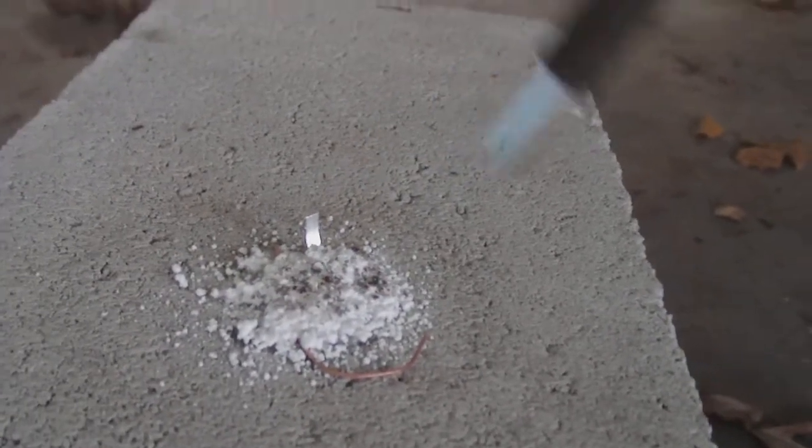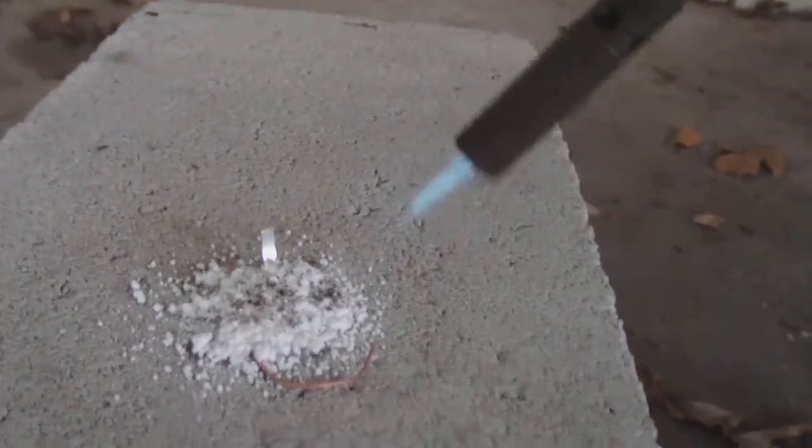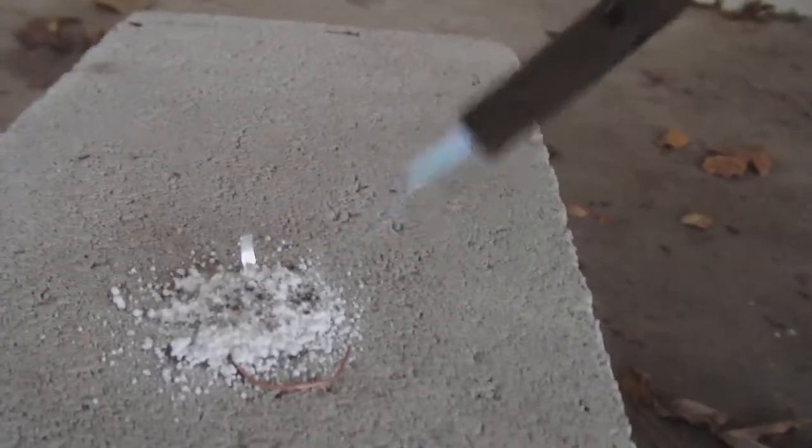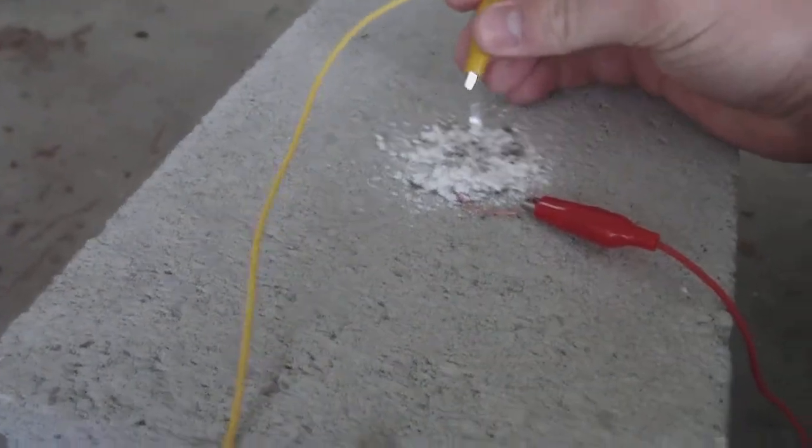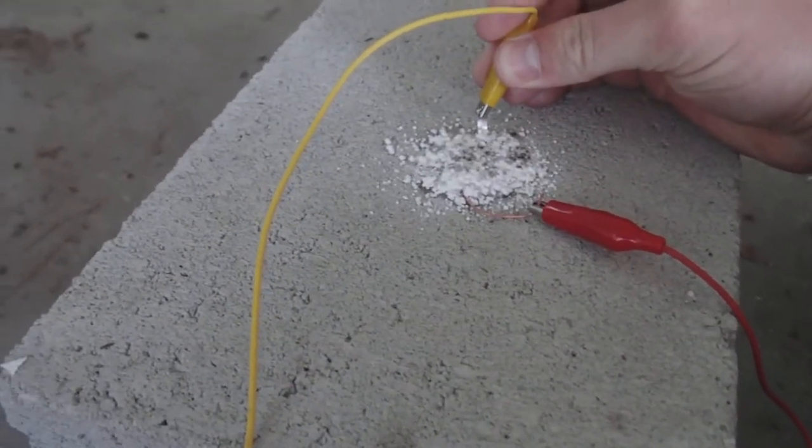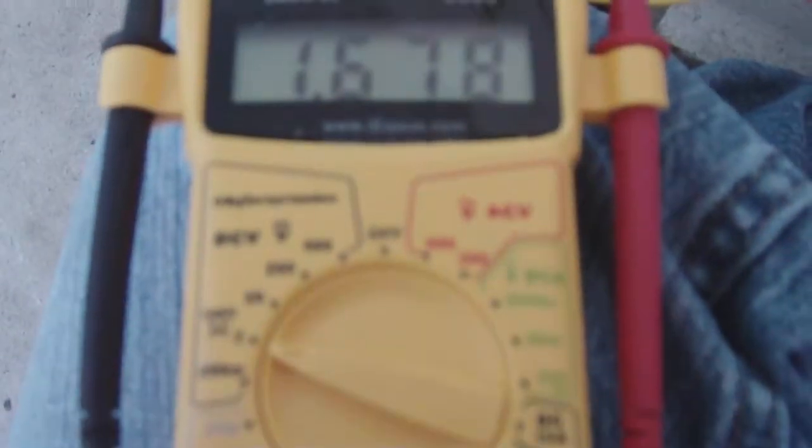Alright, I believe that's it. Turn that off. Turn the multimeter on. This could be hot. Very hot. Probably fragile too. As you can see, 1.6 volts on the 2 volt scale.